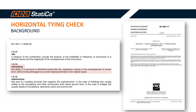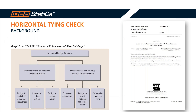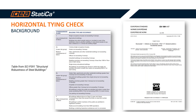The tying check provided in Ideastatica is part of the generic strategies for designing structures for accidental actions, specifically based on limiting the extent of localized failure. To achieve this, we apply prescriptive rules that guarantee the structural robustness of the structure. These rules are defined in Annex A of this Eurocode part. According to this Annex for steel buildings, the designer needs to classify the structure into a consequence class, which defines the design rules that must be applied on the structure, member, or even at the connection level.